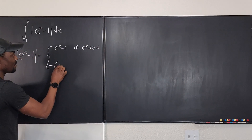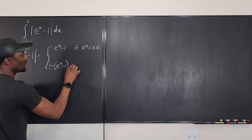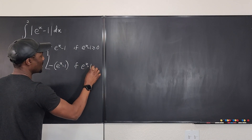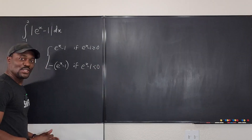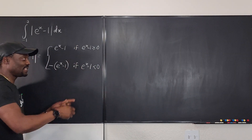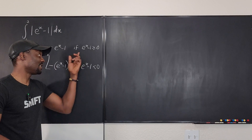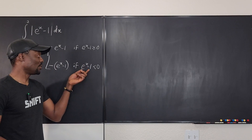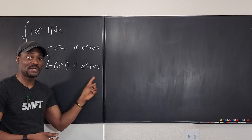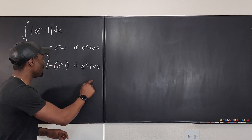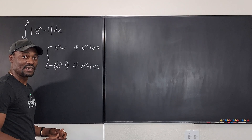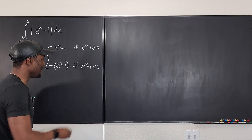And it would be the negative of it, negative e to the x minus one, if e to the x minus one is less than zero. So now my job is to choose either of these. I recommend choosing one of the inequalities, solve and find the value of x for which the inequality is true, and find where that x is going to be on the interval that you have to integrate.